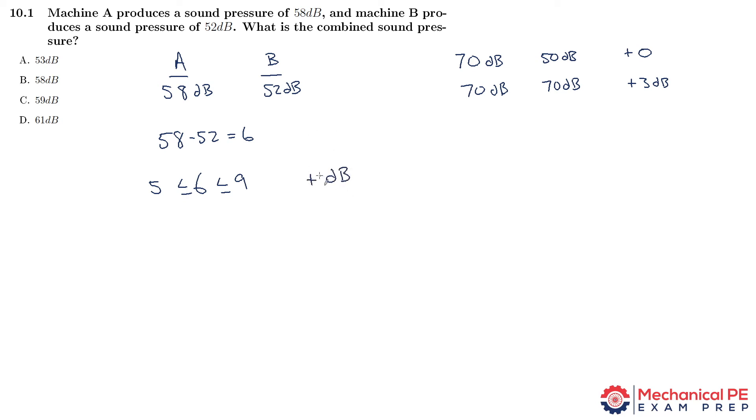Just to be absolutely clear, we add 1 decibel to what? We add it to the higher of the two sources because that's the one you're going to hear more anyway. So we're going to do 58 plus 1, which gives us 59 decibels. That's closest to answer choice C.